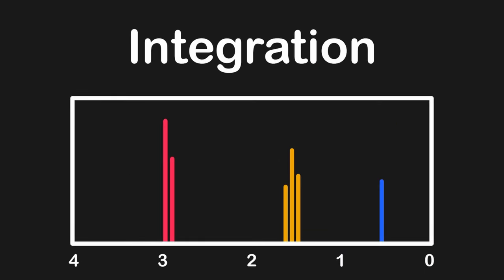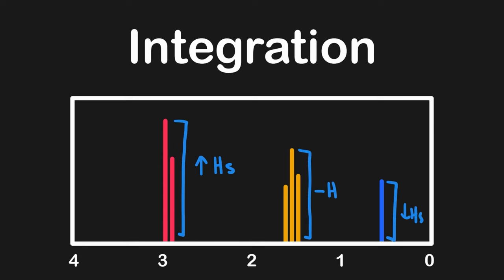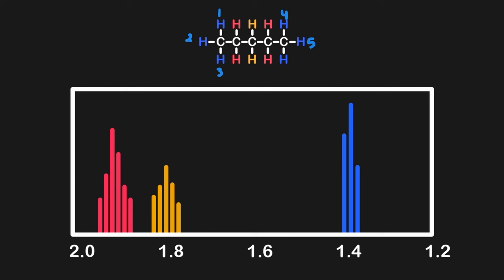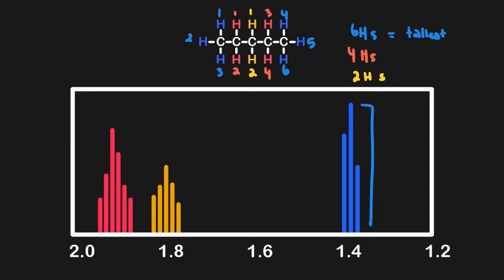Now that we have learned about signals and splits, let's discuss integration, which describes how tall each signal is and corresponds to the amount of a particular unique hydrogen. For example, the red signal has the tallest peak, meaning there are far more red hydrogens in the molecule compared to those representing the yellow and blue signals. In pentane, there are six unique blue hydrogens, four unique red hydrogens, and only two unique yellow hydrogens. The blue signal is therefore the tallest, the red signal the second largest, and the yellow signal the shortest.